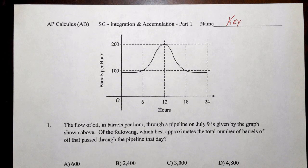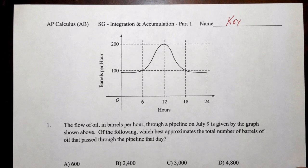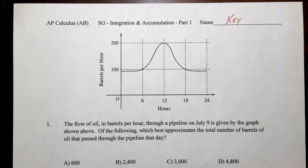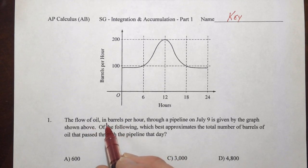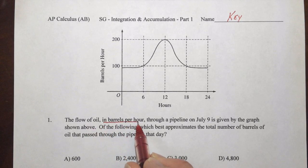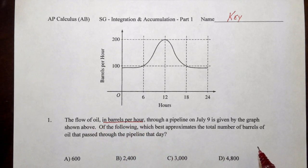So this is the solution key for the integration and accumulation study guide. Our first problem, we see that we're given the flow of oil in barrels per hour. So this is a rate that's given to us. In other words, it's a derivative.